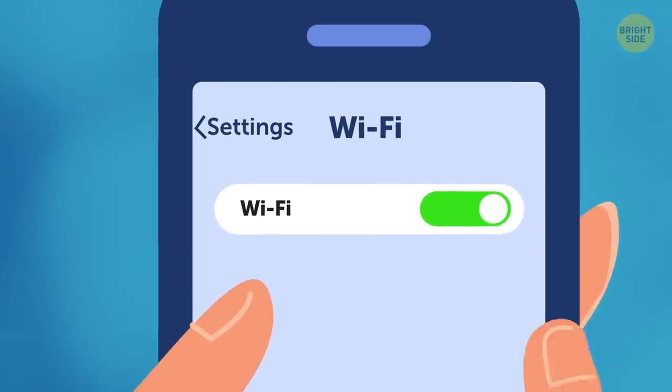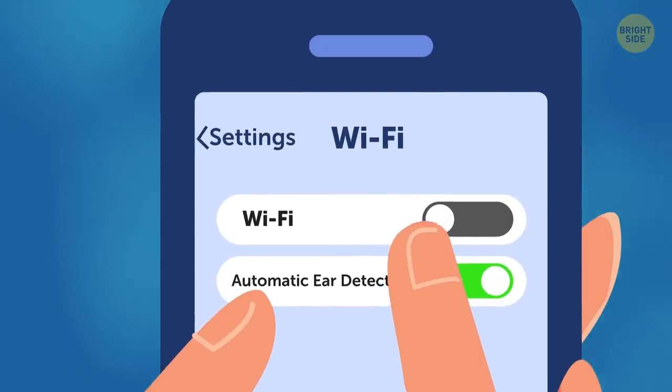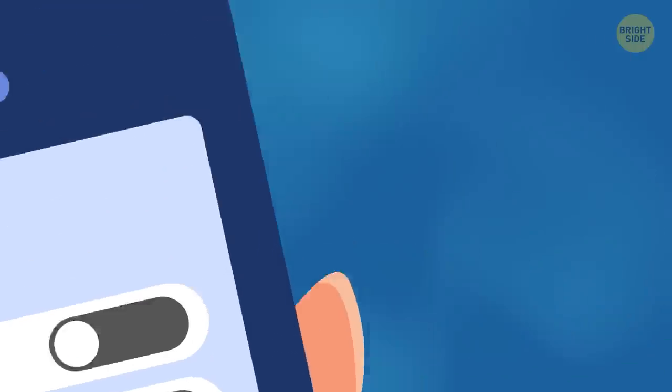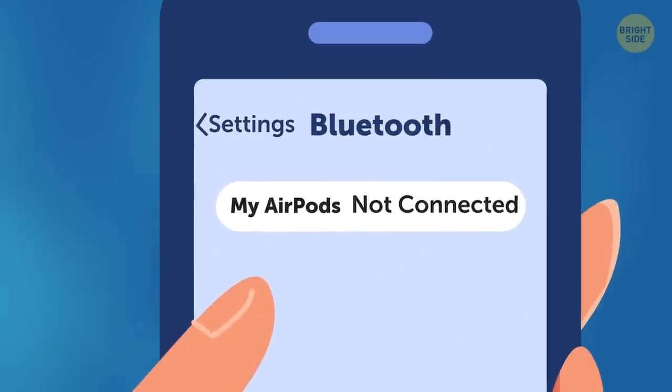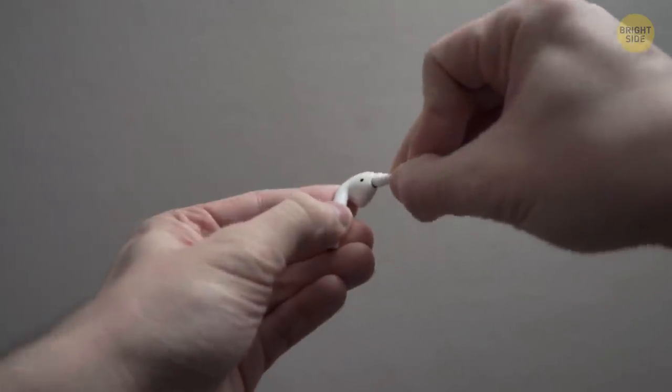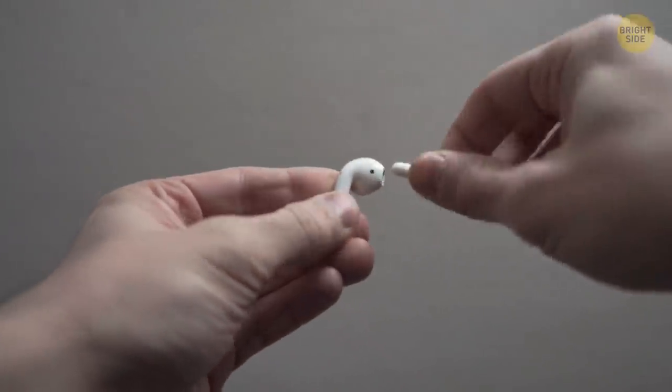You can also try turning off the Wi-Fi on your phone, unpairing them from your Apple Watch, or turning off automatic ear detection. But if none of these methods have worked, try cleaning your earbuds. The disconnection problem may occur because of the dust and dirt stuck inside.